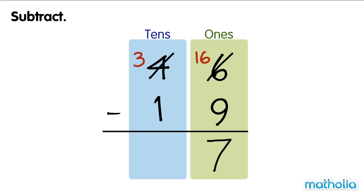Next, subtract the tens. Three tens minus one ten equals two tens. Forty-six minus nineteen equals twenty-seven.